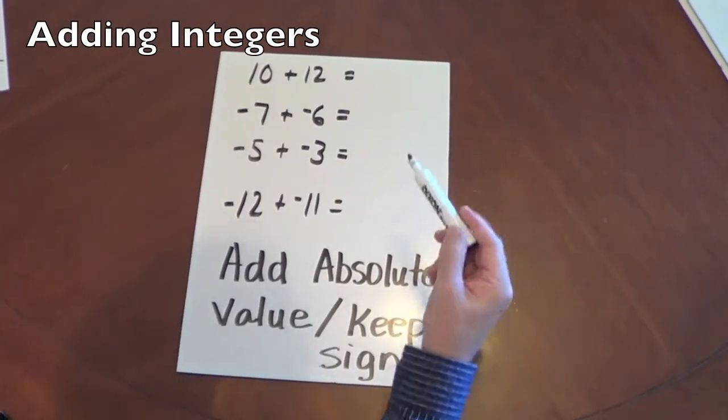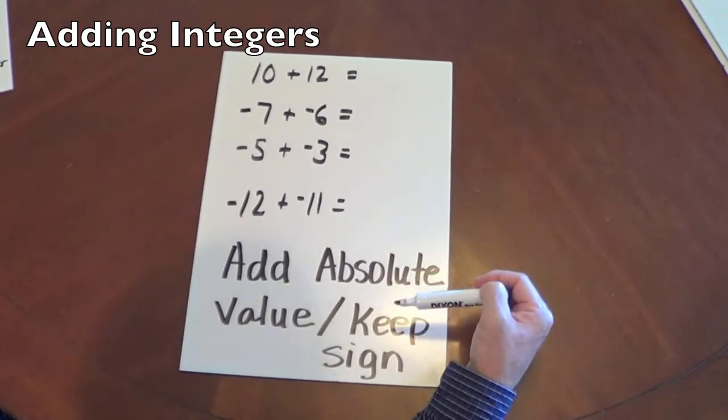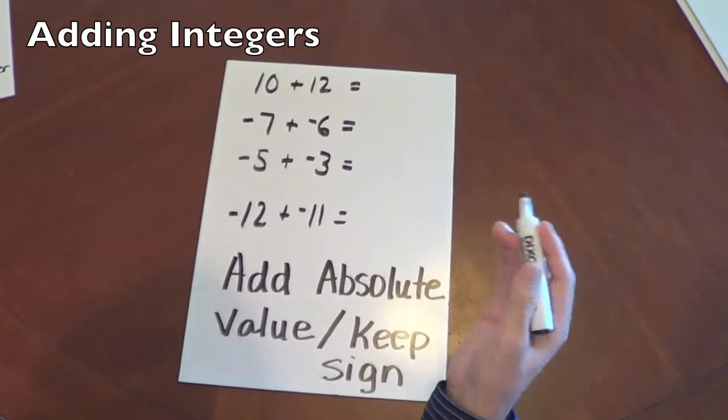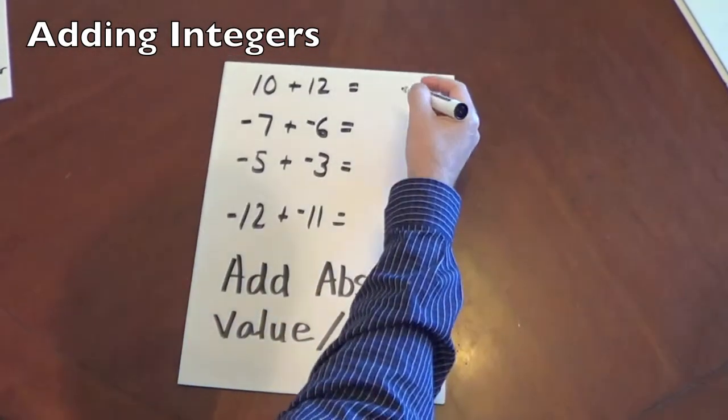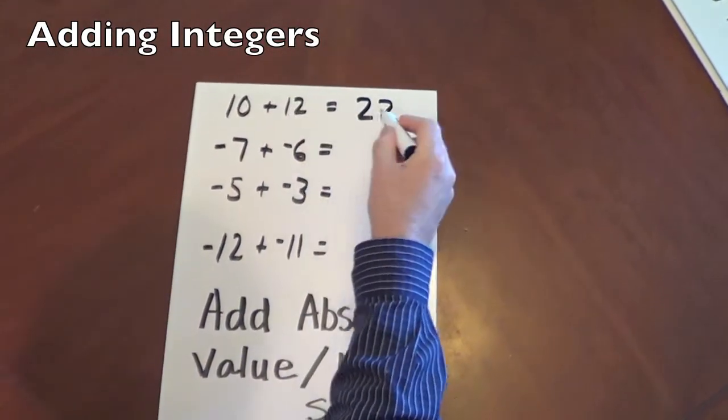Okay, so if we're adding two integers with the same sign, again, we're going to add the absolute value and keep the sign. So if we have two positive, that's again simply what you've been doing for years and years. 10 plus 12 would be 22. Positive plus a positive, it's going to be positive.